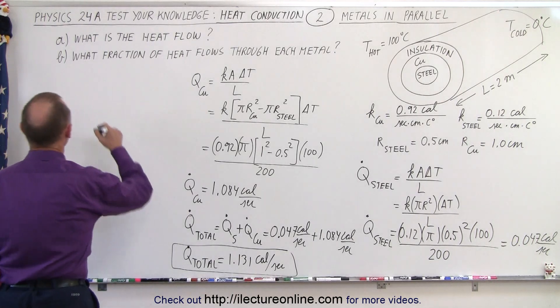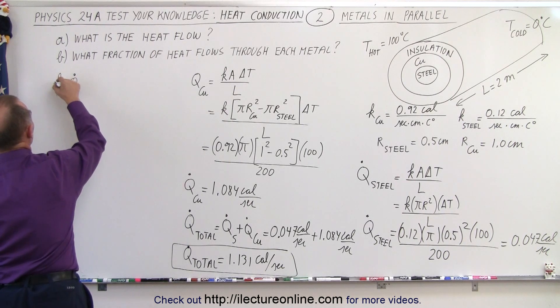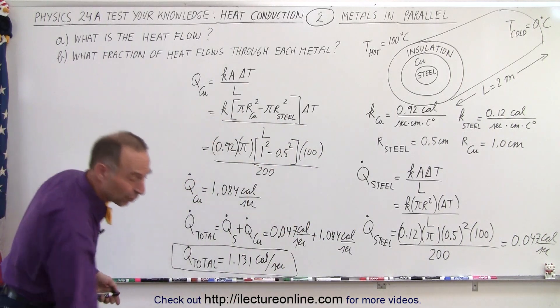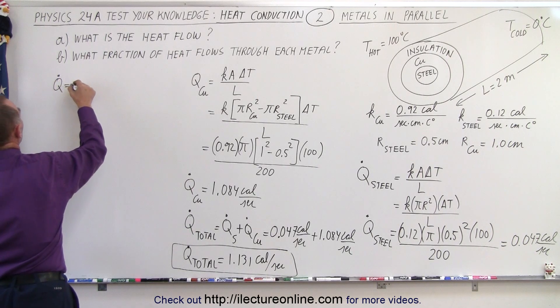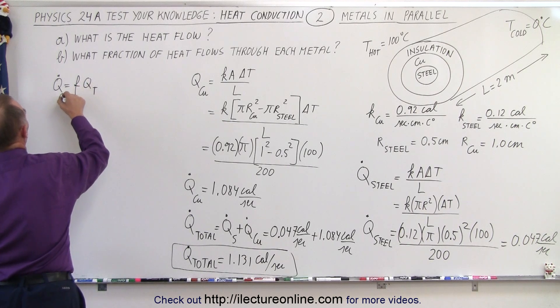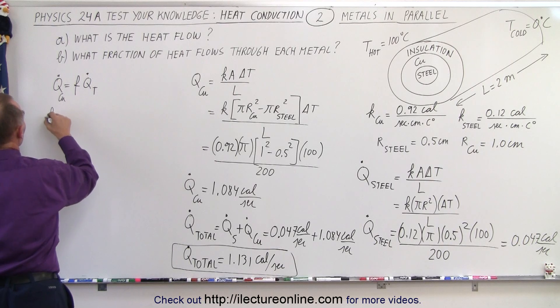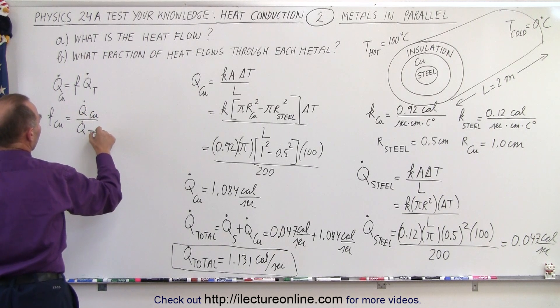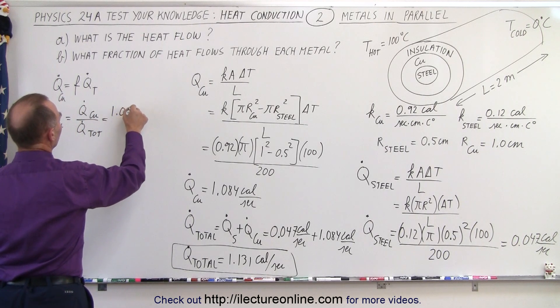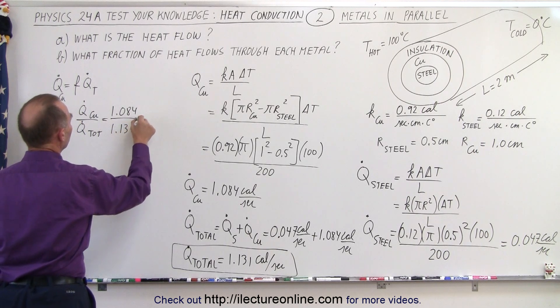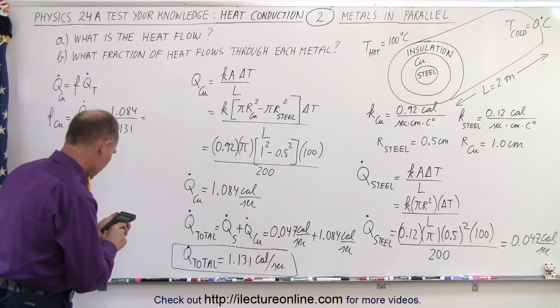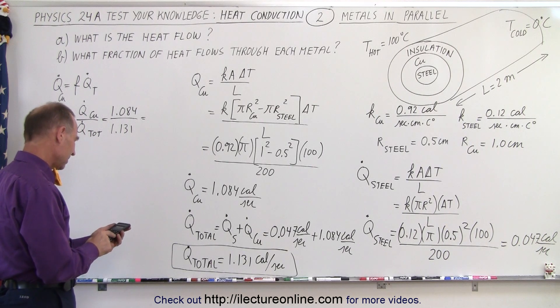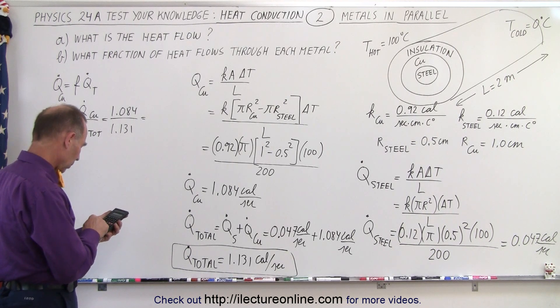Now what fraction for each? So q dot, the fraction of q dot relative to the total. I want to try to put that in some sort of sensical equation so we can make it make sense. So q dot is equal to what fraction of q total? And let's start with the copper. All right, so that means the fraction for the copper is equal to the ratio of q dot for the copper divided by q dot total. And so the q dot for the copper is 1.084 divided by q dot total would be 1.131. And let's see, that's nearly the whole amount, isn't it? So divide that by 1.131 equals, that would be about 0.9, let me try it again.